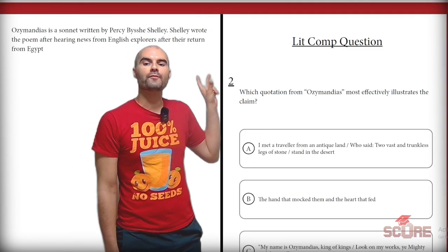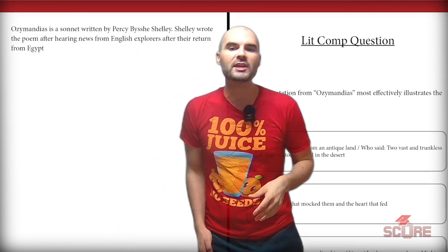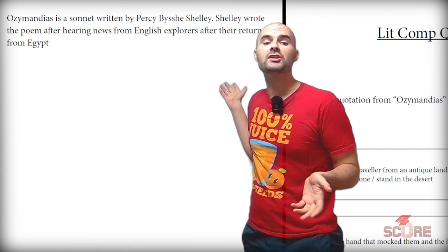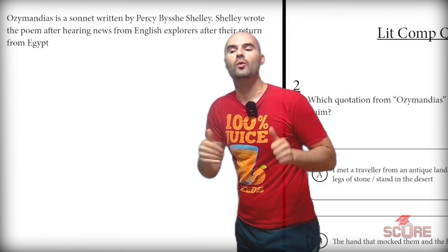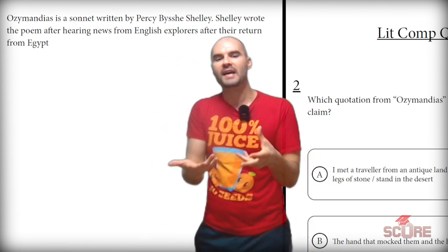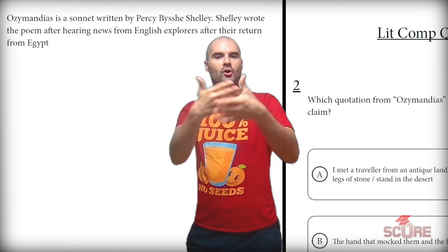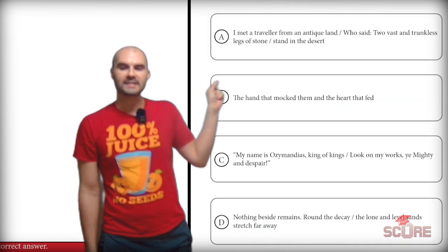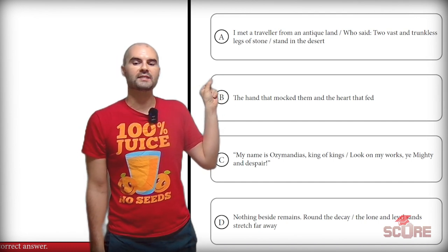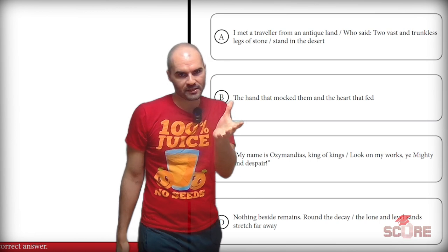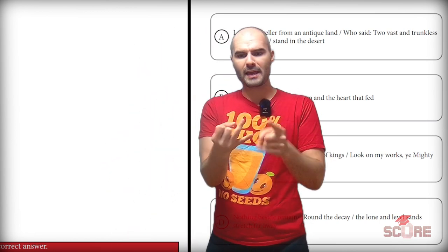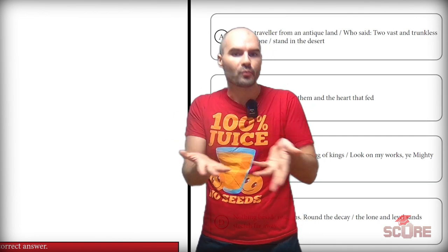Our second question says: which quotation from Ozymandias most effectively illustrates the claim? We can just read that second line in the paragraph: Shelley wrote the poem after hearing news from English explorers after their return from Egypt. So we're looking for something that supports the idea that some explorers had come back and told a story. The first option says: 'I met a traveler from an antique land who said, two vast and trunkless legs of stone stand in the desert.' That seems like the perfect answer — it's literally telling us about travelers, which are the English explorers, and it says an antique land in the desert, which we can infer would be Egypt. A is our best answer.